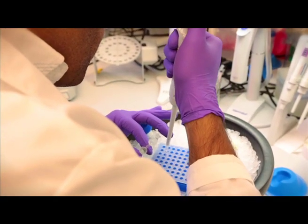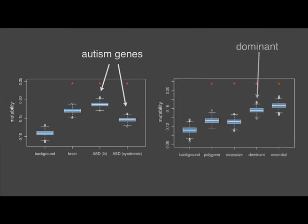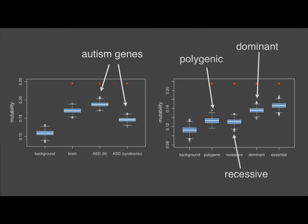When we examined the mutability of specific genes, genes associated with autism were more mutable than the average gene. In particular, genes associated with dominant disorders were highly mutable, and to a lesser extent, mutability was elevated for genes associated with recessive diseases and with complex human traits.